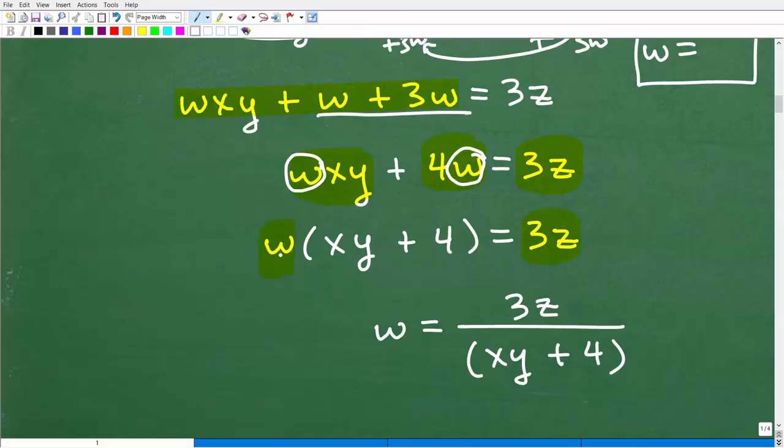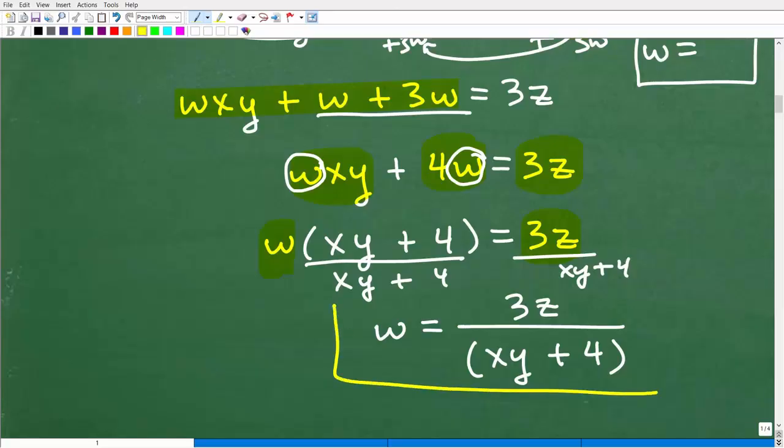And now it's pretty easy to get w by itself. All I need to do is divide both sides of the equation by xy plus 4. And over here this would be an xy plus 4. And this is the final answer right here.